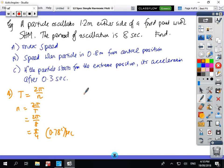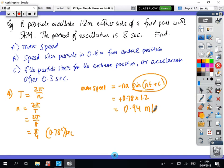And then from there, the speed formula is -NA sin(Nt + C). The maximum will occur when sin is at 1. So the maximum speed will be 0.78 times A, which is 1.2. We won't worry about the minus sign because that just means direction. So that gives us 0.94 meters per second.